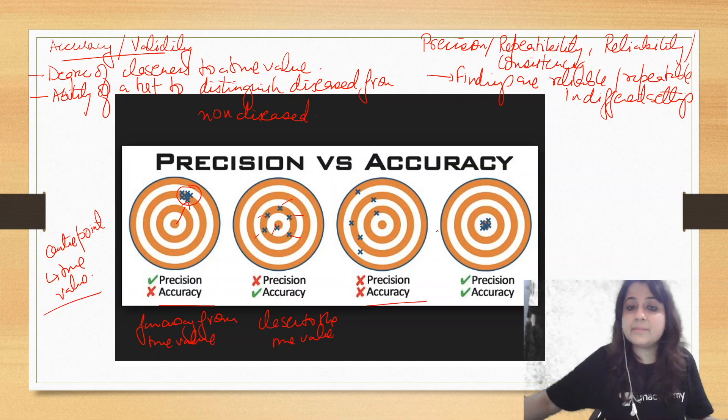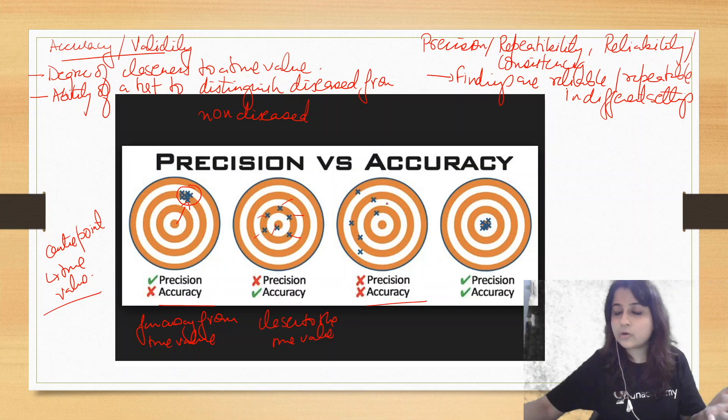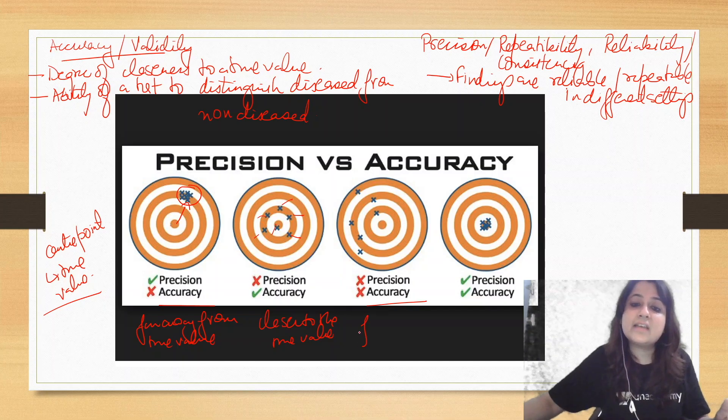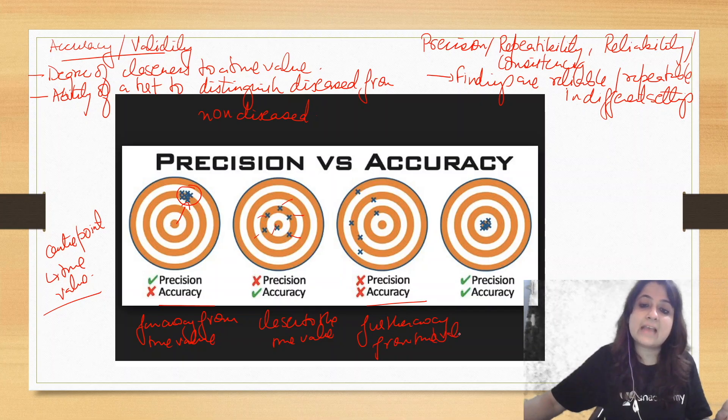Look at the third image. Here, the darts every time are hitting at different points also. So findings are not replicable, so it lacks precision. And it's also farther away from the true value, further away from true value. So it also lacks what? Accuracy.